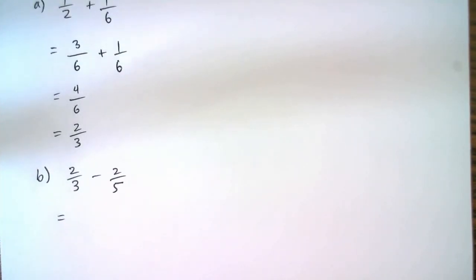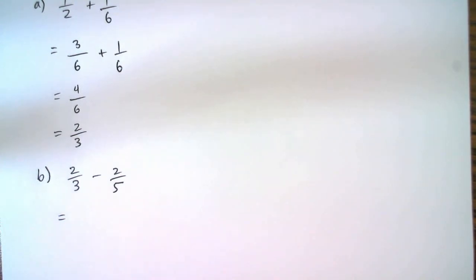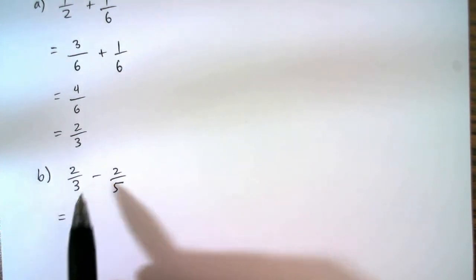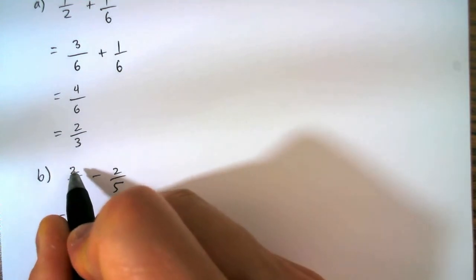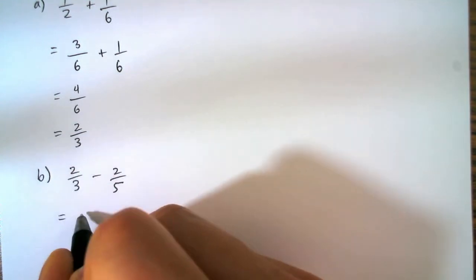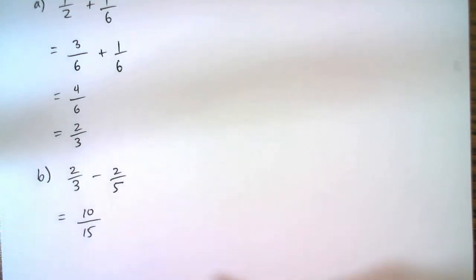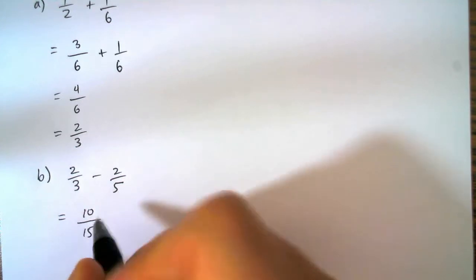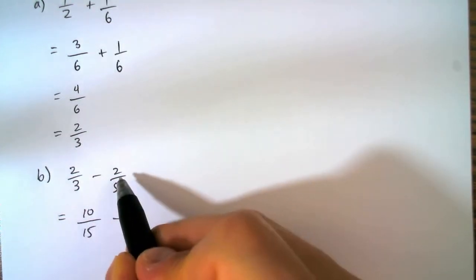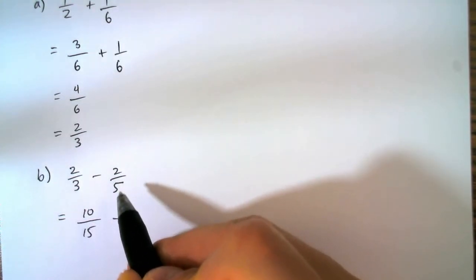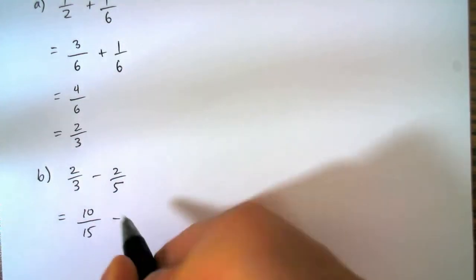Here we're doing subtraction but we still have to do the same thing in order to get a common denominator of 15. I'm going to multiply the numerator by five and the denominator by five. And in this case I'm going to multiply the numerator and denominator each by three.